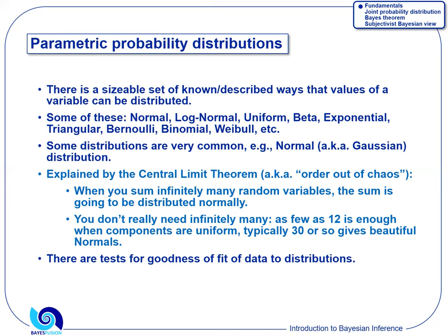Normal distribution is very common. It's explained by a very powerful theorem in statistics known as the central limit theorem. The central limit theorem says that if you sum infinitely many random variables, the sum is going to be distributed normally — as long as these variables are not too weirdly distributed. In fact, one way of generating samples from a normal distribution is generating as few as 12 numbers from a uniform distribution, adding them, normalizing, and you get beautiful normal curves. That's how powerful the theorem is.